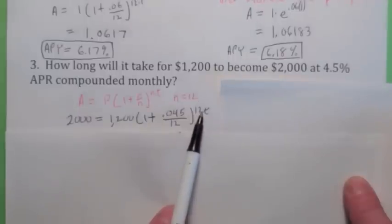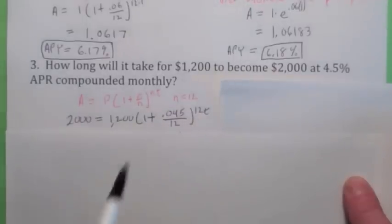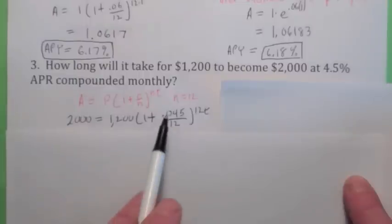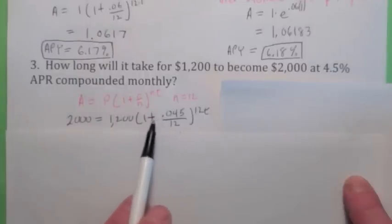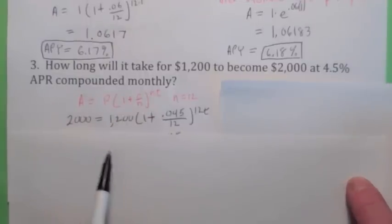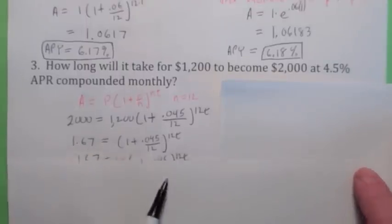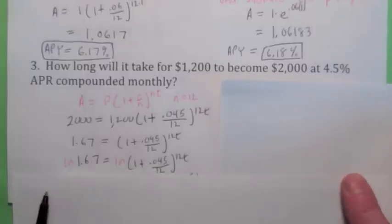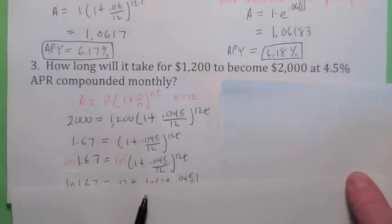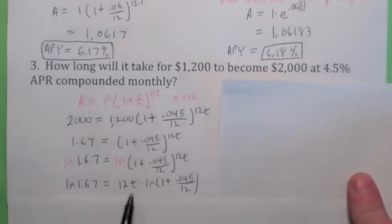How do we solve an exponential equation for T? Well, we're going to use logs, but remember, you don't want to take the logarithms until you get the exponential part by itself. So first divide by 1,200. When you divide by 1,200, you get about 1.67 equals this. Now take the natural log of both sides, and you can bring down the exponent. The last step to get T by itself, all you have to do is divide both sides by 12 and by this mass here. So this is what you end up with.